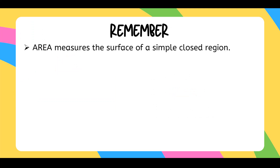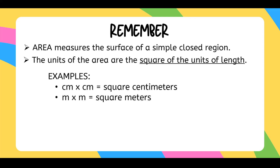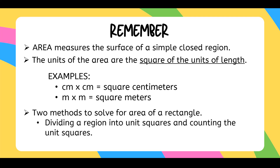Always remember: area measures the surface of a simple closed region, and the units of area are the square of the units of the length — for example, cm by cm gives square centimeters, and meter by meter gives square meters. There are two methods to solve for the area of a rectangle: the first is dividing a region into unit squares and counting them, and the second is using a formula. I hope you learned how to find the area of a rectangle today. See you next time!